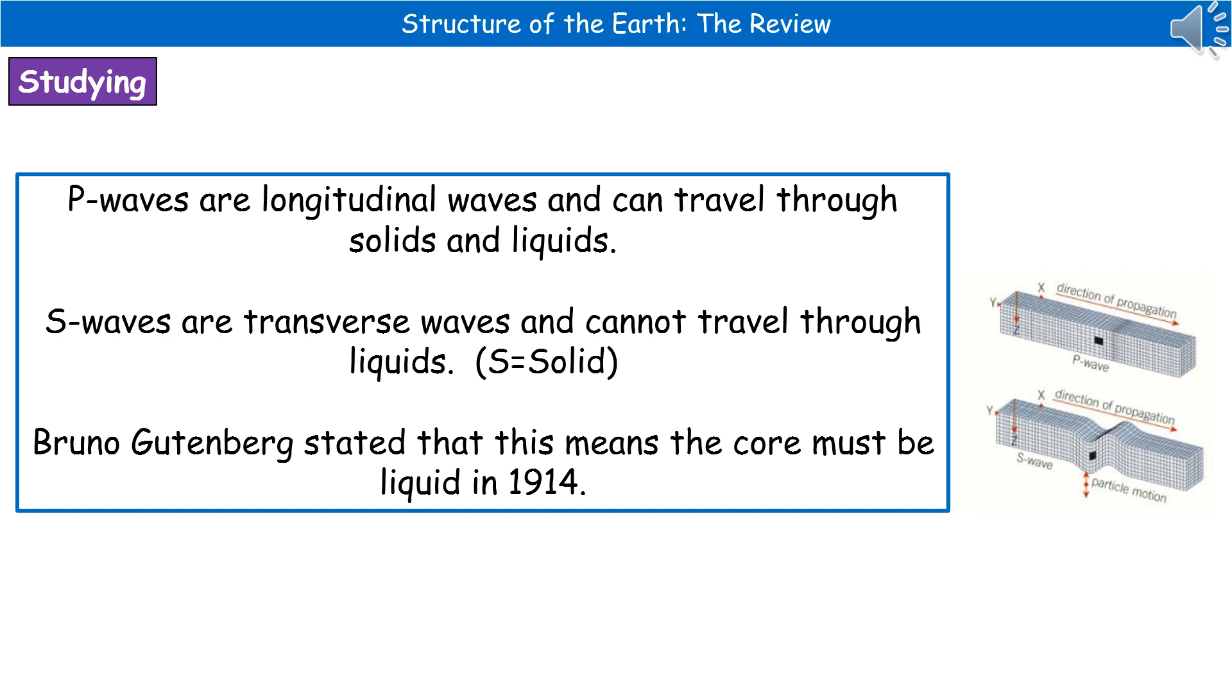S-waves are not able to travel through any liquid part of the Earth's structure. What we saw on the previous diagram was that we get shadow zones for S-waves on the other side of any liquid region. The shadow zones for P-waves are due to refraction.